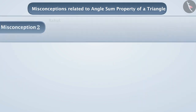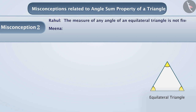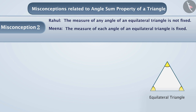Misconception 2. Rahul and Meena are discussing about an equilateral triangle. Rahul thinks that any angle of an equilateral triangle is not fixed, whereas Meena thinks that all angles of an equilateral triangle are fixed. Find out whose opinion is correct.